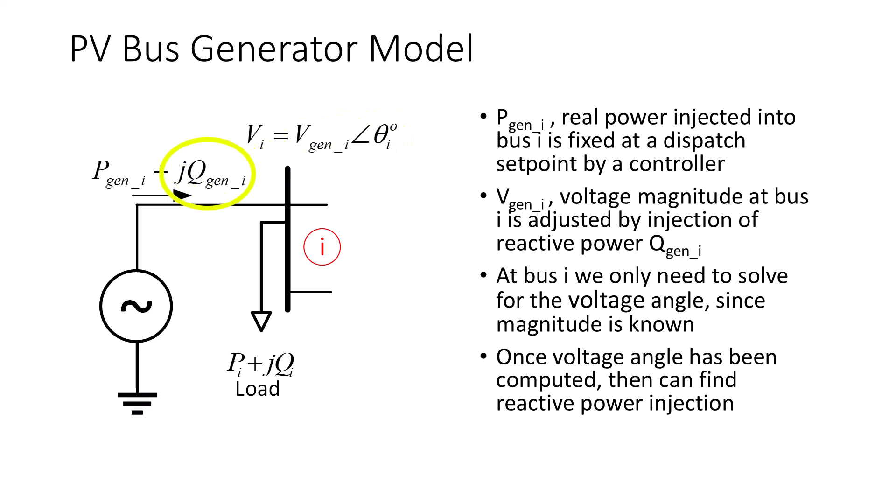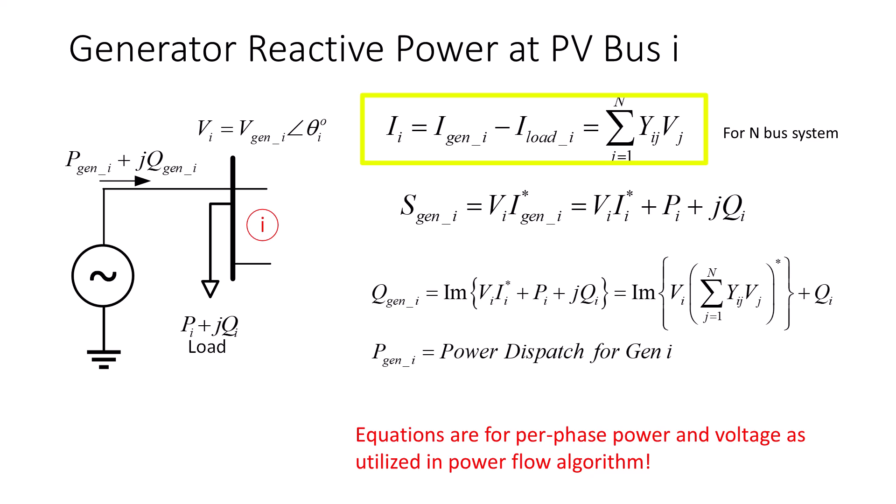The net injected bus current, I sub I, that we find by multiplying the i-th row of Y bus by the voltage matrix is equal to the difference between injected generation current and load current as shown here. The injected generator complex power is VI times the conjugate of the injected generator current, which is equal to V times the conjugate of current plus the load power. We can use this relationship to find the reactive power, QGen, by taking the imaginary part of the complex generator power. Note these equations are for single-phase power, so as to be consistent with the per-phase model utilized in the power flow program.